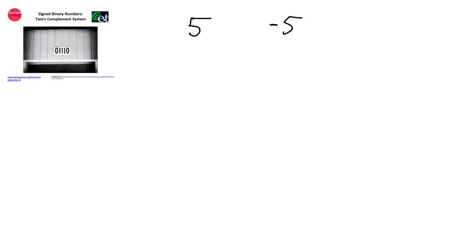In a writing system, we represent signed numbers by putting a negative sign in front of negative numbers. So positive 5 is just written as 5, and negative 5 is written with a negative sign in front. Similarly, we could do the same thing with a binary number — 5 in binary is 101, and negative 5 in binary would be negative 101. In a computer system, we don't have the luxury of a negative sign; we can only represent numbers with 1s and 0s. So somehow we have to use 1s and 0s to represent negative numbers, and one way of doing that is the 2's complement system.